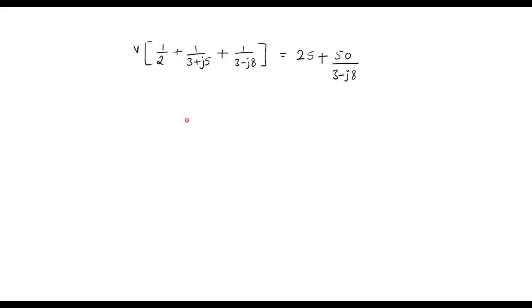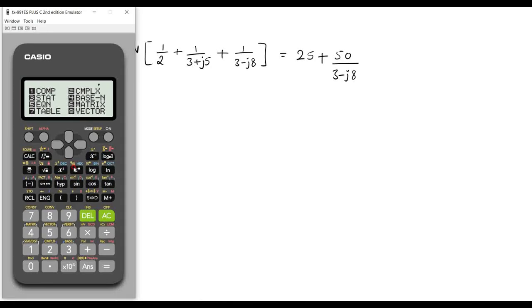Now I will solve this using calculator. Go to the mode and choose complex mode. Now feed the values 1 by 2, that is 0.5, plus 1 over 3 plus J5. You can use this operator 3 plus 5I.